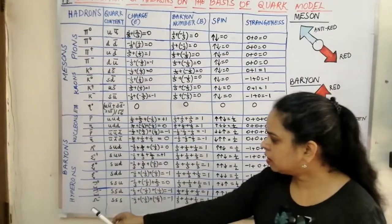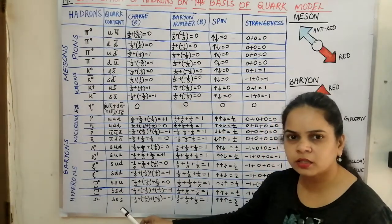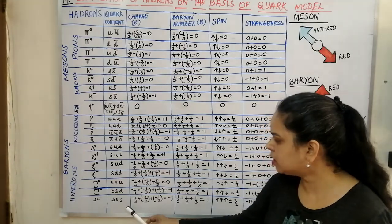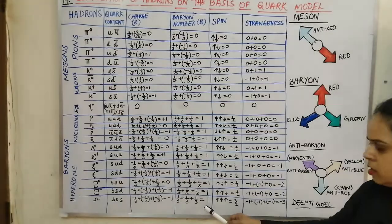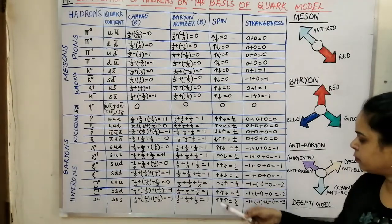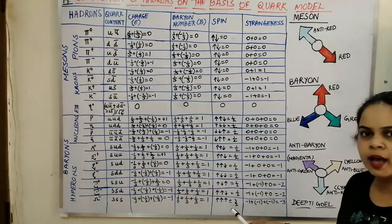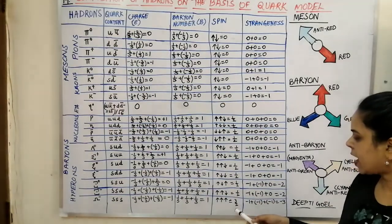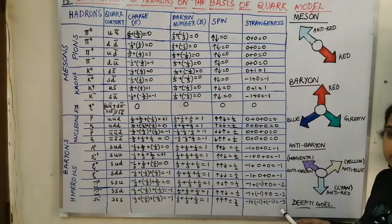In the omega negative particle (Ω⁻), we have the combination of 3 strange quarks (3S), giving a charge value of −1 and baryon number +1. Three up-spins give a spin value of 3/2 — it is important to remember that omega has a spin of 3/2, whereas all others have a spin of 1/2. Since there are 3S particles, the strangeness value is −3.